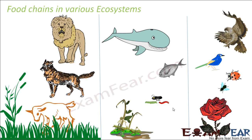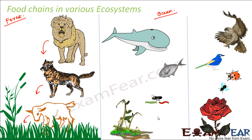Let us look at food chains in various ecosystems. In a forest ecosystem, a common food chain is: grass eaten by a goat, eaten by a fox or jackal, eaten by a lion. In a pond or ocean ecosystem, phytoplanktons act as producers, eaten by small insects, eaten by small fishes, which are in turn eaten by big fishes.